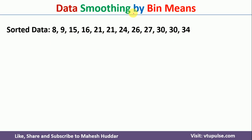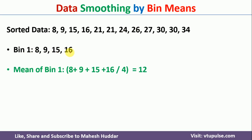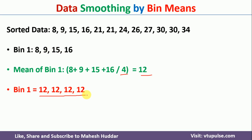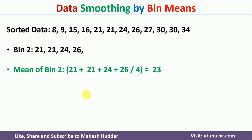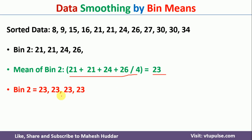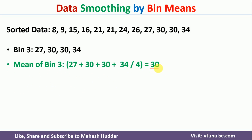Coming back to the second method, that is data smoothing by bin means. Again, we create the bins using equal frequency, and then we calculate the mean of each bin. The mean of bin 1 is 8 plus 9 plus 15 plus 16 divided by 4, which is equivalent to 12. So bin 1 contains all data points as 12. Similarly, for bin 2, which contains 21, 21, 24, 26, we take the average: 21 plus 21 plus 24 plus 26 divided by 4, which is equivalent to 23. So 23 is the data point in bin 2. Similarly for bin 3, the average is equivalent to 30, so bin 3 contains 30 for all data points.